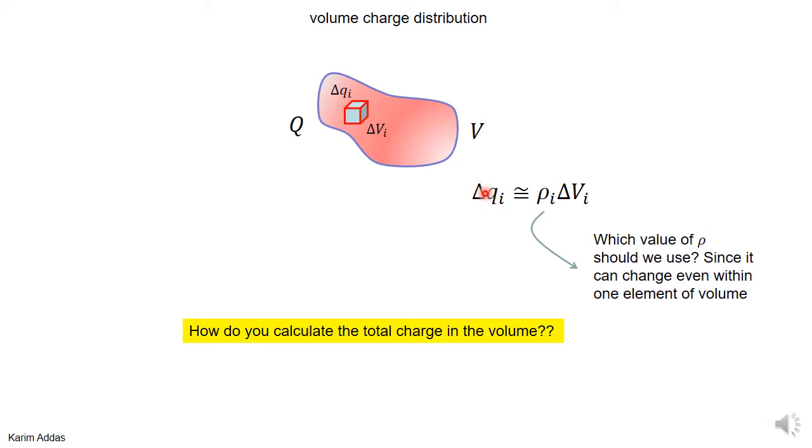The charge in each element of volume is ρ times ΔV. But then we get into the same problem: even when you have a finite element of volume, ρ can change from point to point inside the same element. So which ρ would you take? You could take, for instance, the value of ρ at the center.